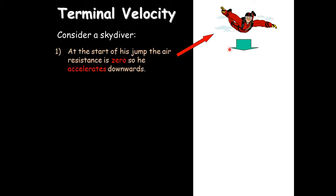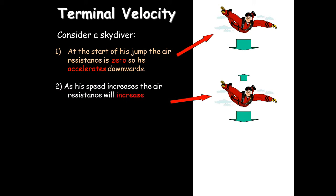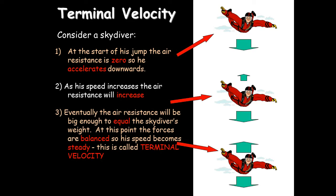Consider a skydiver jumping from a plane. At first there is no air resistance — a big force acts downwards due to gravity, so he accelerates downwards. After some time air resistance takes effect, pushing against him and slowing his acceleration. Eventually the air resistance balances the weight — arrows the same size — and he reaches a steady speed called terminal velocity: he won't get any faster or slower.